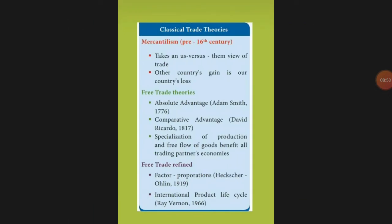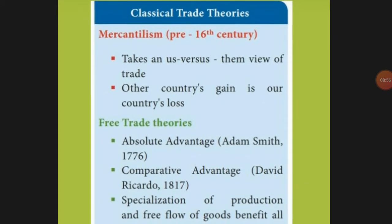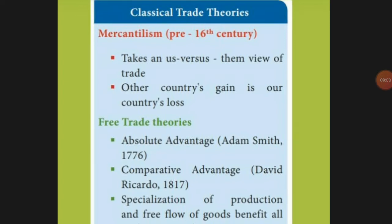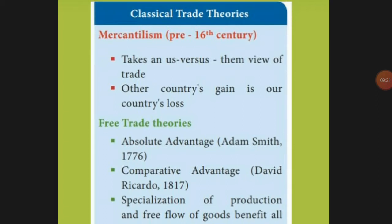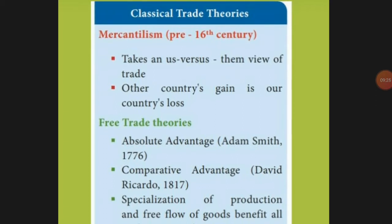According to mercantilism, another country's gain is our country's loss — if you are selling goods to another country, it is a gain for you and a loss for the buying country since they are not producing those goods themselves. The second point is that the free flow of goods benefits all trading partners. The third point is the factor proportion theory — Heckscher-Ohlin (1919) — which we will study briefly in the next topic.